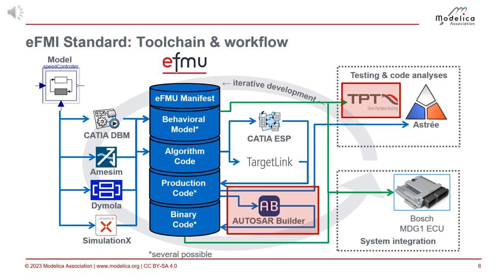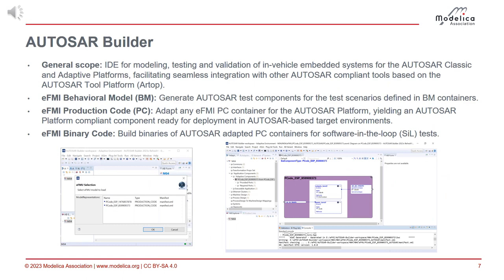Autosar Builder is from Dassault. It's the software where you can take a production code container — it doesn't have to be a specific one, it could be any other production code container — and it generates another production code container and binary code container where the code is adapted for Autosar Adaptive or Autosar Classic, and then you can deploy it on your Autosar platforms. Autosar Builder can also take behavior model containers and generate test drivers from them. You can deploy such a test driver on your target, or keep it off-target, communicating via the CAN bus to provide reference inputs and check outputs.